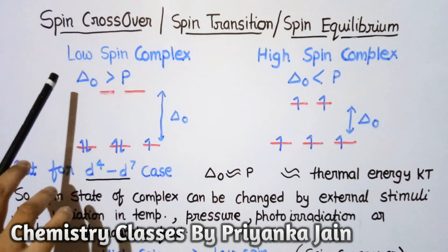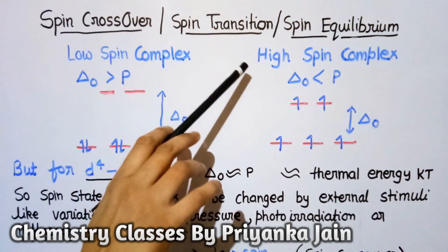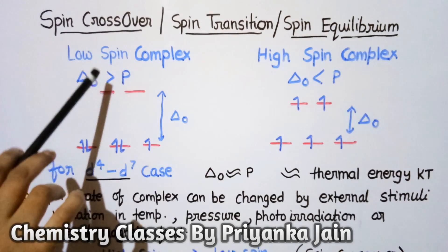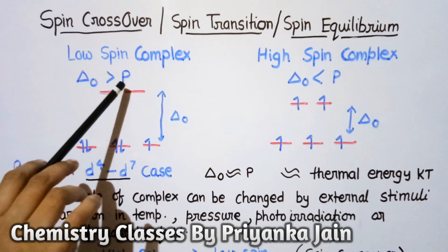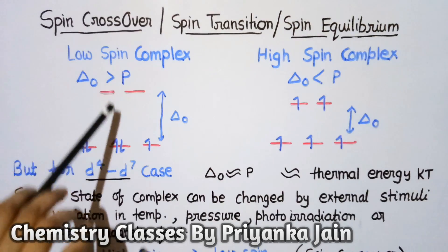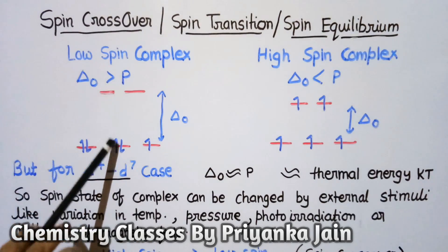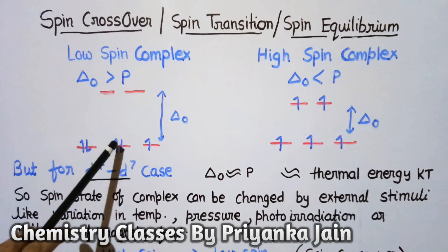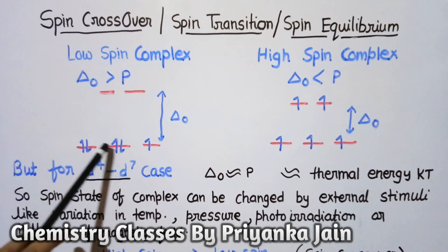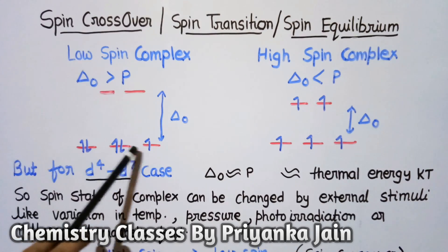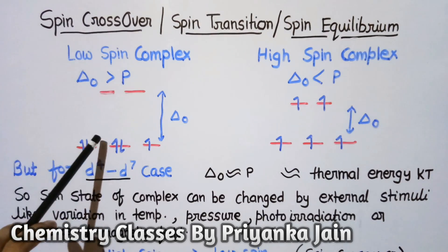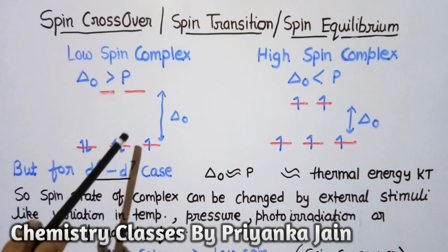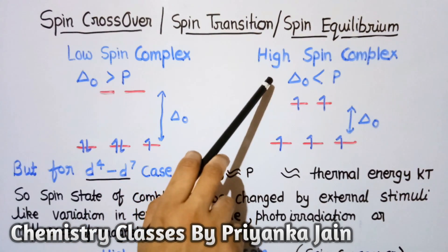In transition metal complexes, there are two types: low spin and high spin complexes. Low spin complexes are formed when the crystal field splitting energy Δo is very high compared to the pairing energy P. The gap between the eg and t2g levels is large, so electrons require more energy to jump into the eg level and instead pair up in the t2g level. Such complexes have low magnetic susceptibility.